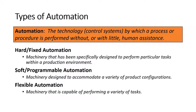Hard or fixed automation is any machine specifically designed to perform a specific task within a production environment. It's typically not programmable. It could be a conveyor system, or some type of machine motion such as a lever, arm, or link — anything custom made to perform a specific task in the production environment. Soft or programmable automation, on the other hand, is any machine that can accommodate a wide variety of product configurations — meaning the products made through the manufacturing process.